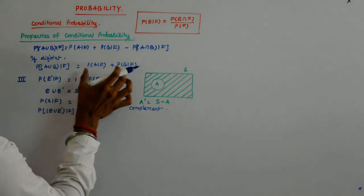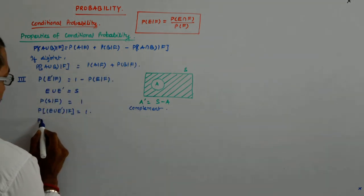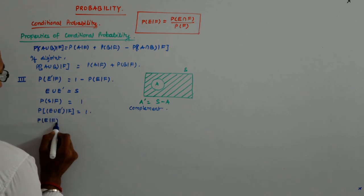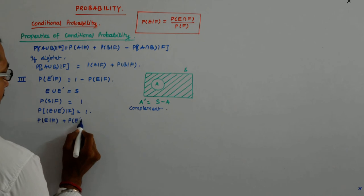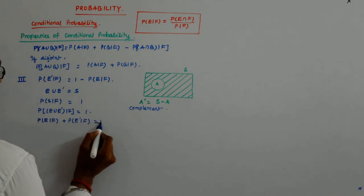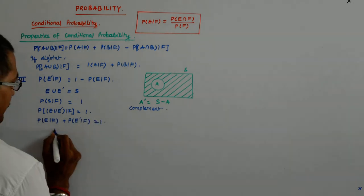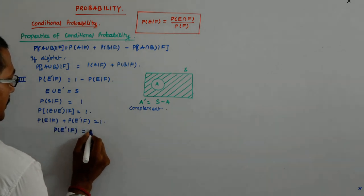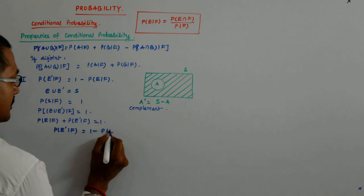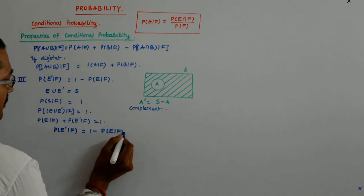And since they are disjoint, we have P(E|F) plus P(E dash|F). So, immediately it gives me P(E dash|F) is equal to 1 minus P(E|F).